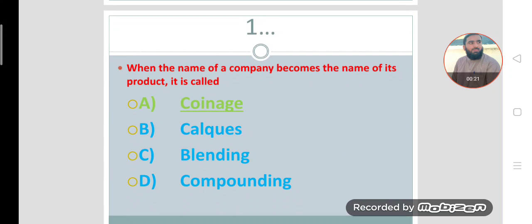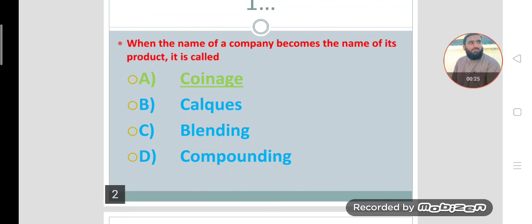In today's lecture, we are trying to learn linguistics MCQs based on morphology. So let's study. Number first: When the name of a company becomes the name of its product, it is called coinage. Coinage means the invention of totally new words.